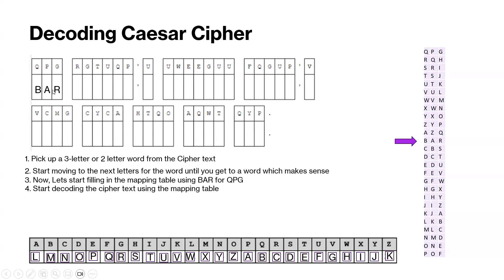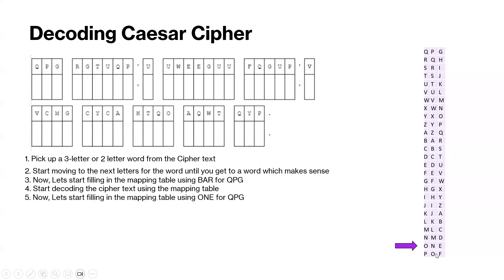Then let's start decoding the ciphertext using the mapping table. For the next word, it's going to be r is c, g is r, t is e, u is f, q is b, p is a, and u is f. So krefba, that doesn't really make sense. That doesn't seem like a word in the English language. So bar isn't correct, but we still have one to try.